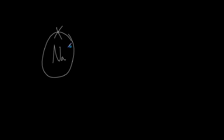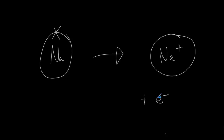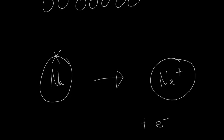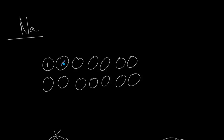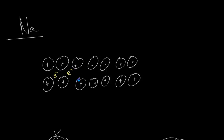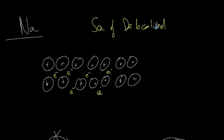Rather than adding seven electrons, what sodium is going to do is simply remove its outer electron. Now each one of these circles represents a positive ion. So where have the electrons gone? The electrons - I'll draw them in yellow - are free to buzz around wherever they like. We call these delocalized electrons. The phenomenon of having electrons buzzing around all over the place we call a sea of delocalized electrons.